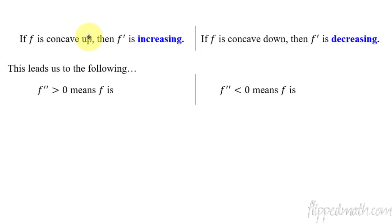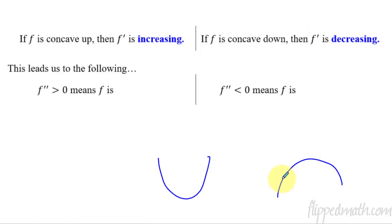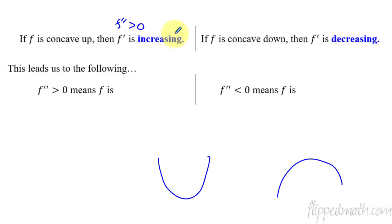Just like what we just showed — if you have something that's concave up and you move along the function, the slope is increasing. And if it's concave down, the slope would be decreasing, getting more and more negative as you move to the right. So that also leads us to the following: if f prime is increasing, then that something's derivative would have to be positive. So if f prime is increasing, then f double prime is positive. Or if f prime is decreasing, then f double prime would have to be negative.